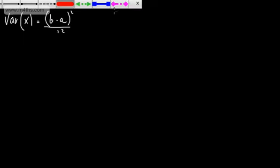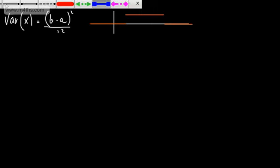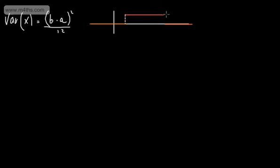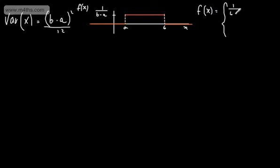Let's sketch the continuous uniform distribution. We have the x-axis with value a on the left and value b on the right. The height of the distribution is 1 over (b minus a). So f(x) is defined as 1/(b minus a) where x is between a and b, and 0 otherwise.